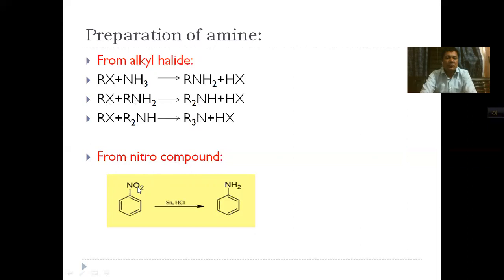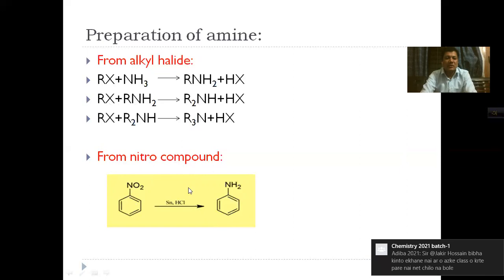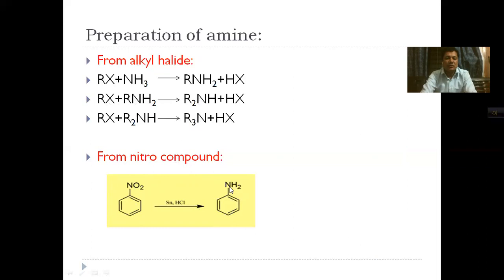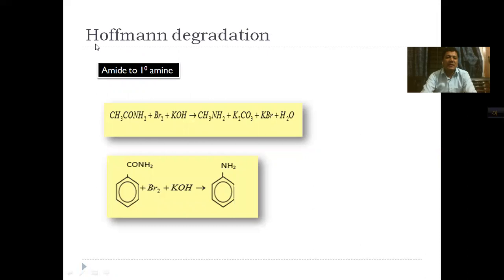Another preparation method uses nitro compounds. If we have a nitro compound with an NO2 group, we can convert nitrobenzene to aniline by converting the nitro group (NO2) to an NH2 group using the reduction method. A reducing agent — tin and hydrochloric acid — is used to reduce the nitro group and convert it to aniline, an aromatic primary amine.